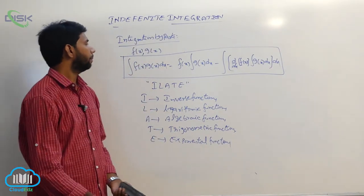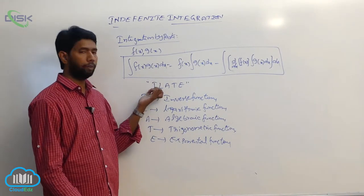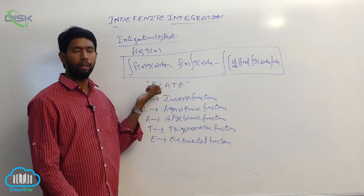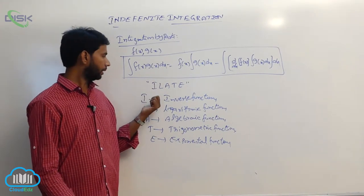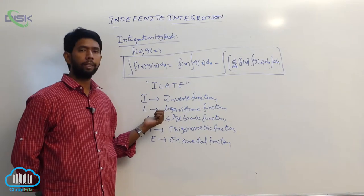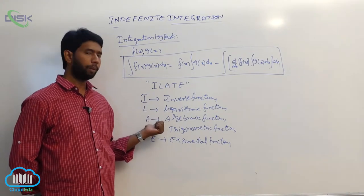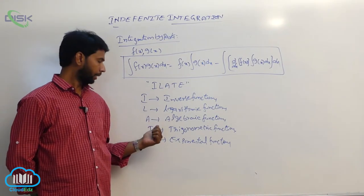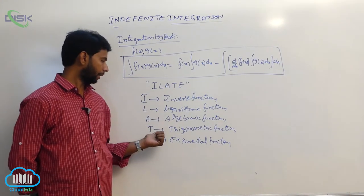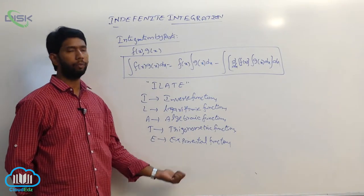In integration by parts, the first function is taken from the word ILATE, where I is inverse functions, L means logarithmic functions, A means algebraic functions, T means trigonometric functions, and E means exponential functions.